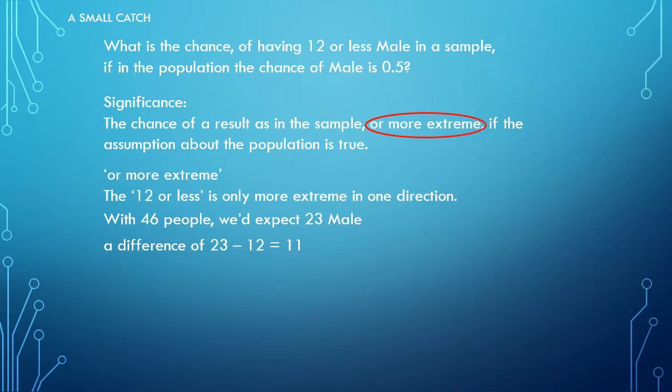So a more extreme to the other end would then be the other way around. So we need 23 minus 11, that's the original 12 or less, but now we can also include 23 plus 11, which comes down to 34 or more. And these two together then actually form the 'or more extreme' in either direction.